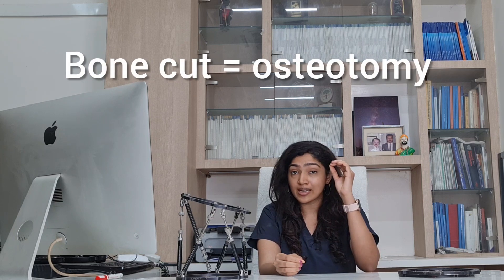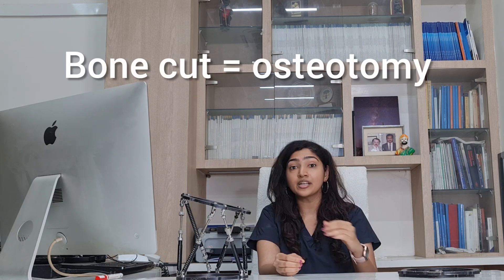The correction happens through surgery. The procedure involves a bone cut, or osteotomy, which is done at the precise site after all those accurate measurements. After the cut is made through a very small incision, it is corrected to a new position and fixed either with the help of plates and screws or an external fixator.